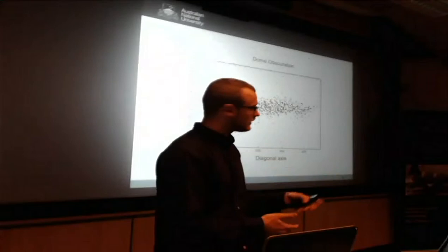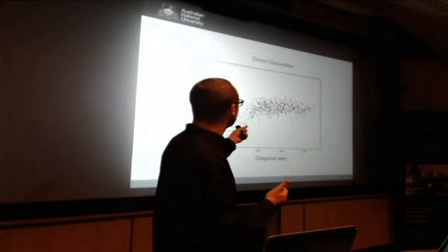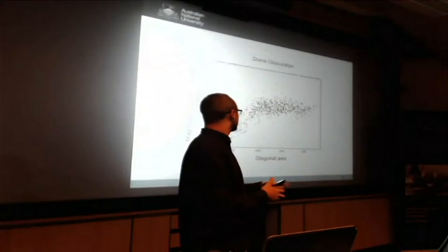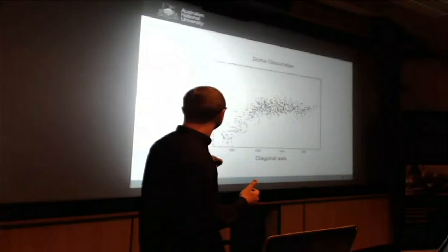I should say before this that we had a few problems with the data, so it's not optimal data. Firstly, it's just raw data, so we haven't done any field subtraction, and we also found some dome obscuration. The dome was blocking part of the mirror.